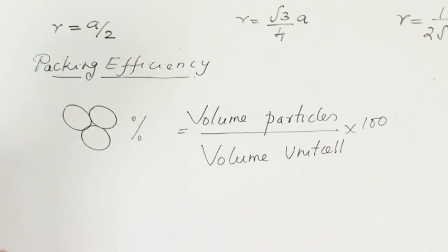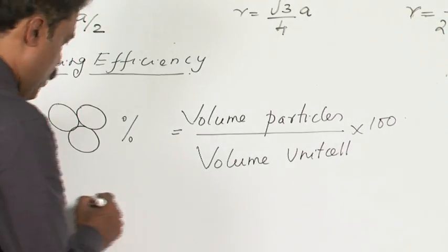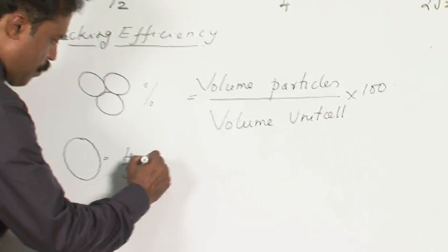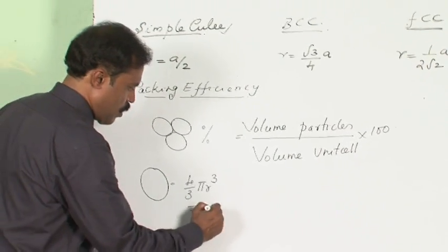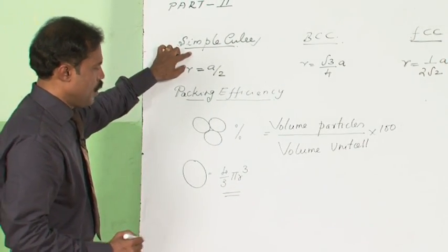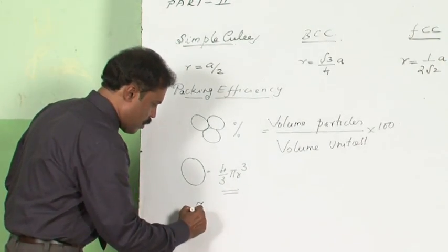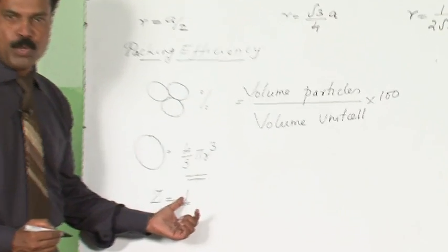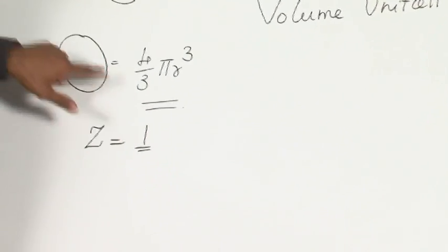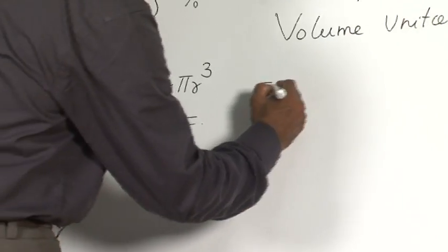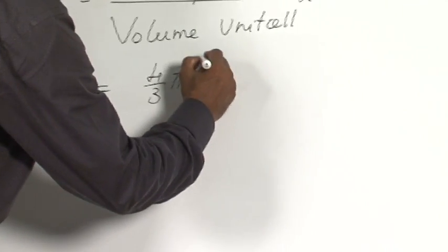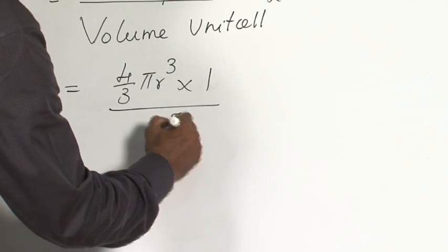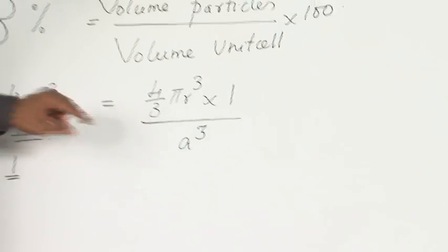To find out the volume of particles, you know the volume of a sphere is 4/3 π r³. In a simple cube, the effective number of spheres is just 1. Therefore, the volume occupied by one sphere is going to be 4/3 π r³ × 1.